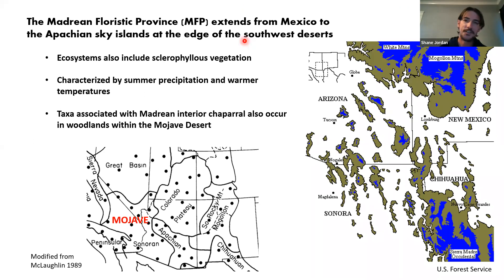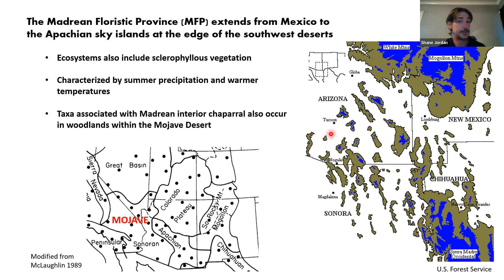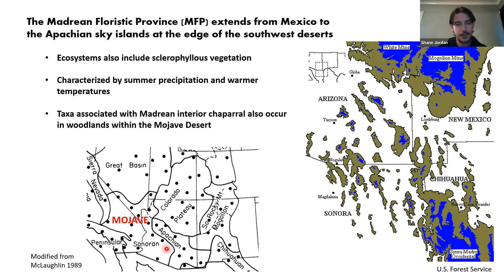The Madrean Floristic Province extends from Mexico up into the Apachean sky islands on the edge of the southwestern deserts, mostly in Arizona. These ecosystems include sclerophyllous vegetation, though they are characterized by summer precipitation and warmer annual temperatures rather than a Mediterranean climate. Taxa associated with the Madrean interior chaparral also occur in woodlands found within the Mojave Desert, where the Apachean section of the Madrean Floristic Province extends up to meet the Mojave.